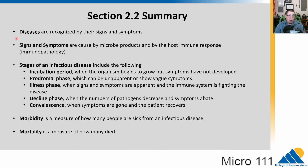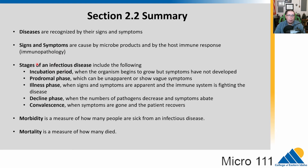To summarize: we use signs and symptoms to recognize and diagnose diseases. These are caused both by products from the microbes and by our own host immune response — that's the immunopathology part. The stages of an infectious disease are incubation, prodromal, illness, decline, and convalescence. Morbidity measures how many people are sick from an infectious disease, and mortality measures how many die from it.